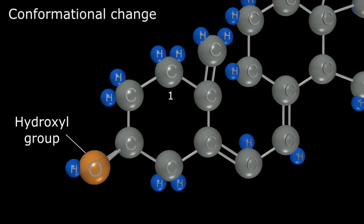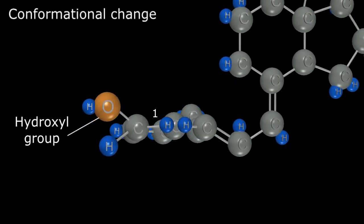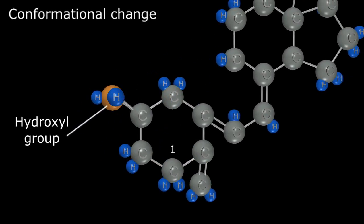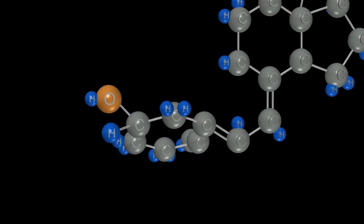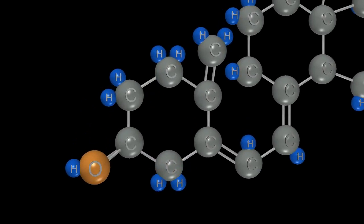As we rotate around the double bond, carbon number 1 moves to this position, and the hydroxyl group off of carbon 3 now projects posterior to the main molecular plane. We'll go back and forth one more time to solidify that conformational shift in your mind.